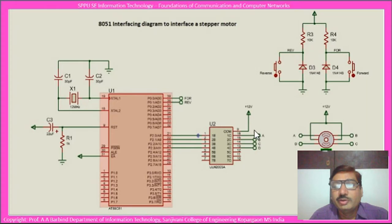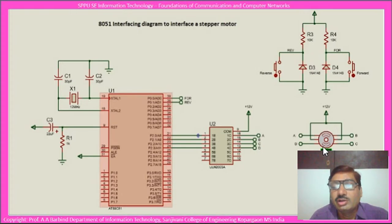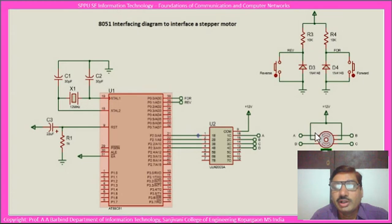There is a specific set of sequences which should be given on inputs A, B, C and D, and that particular sequence should be sent to the stepper motor so that it rotates in either forward or reverse direction. If that particular sequence is given in a specific direction, it rotates in the forward direction. If the same sequence is given in the reverse direction, it will rotate in the reverse direction.